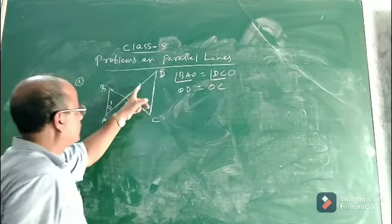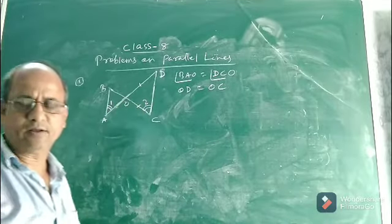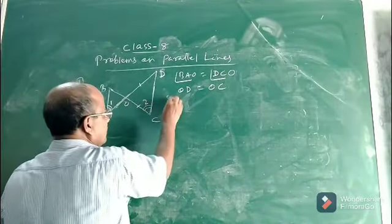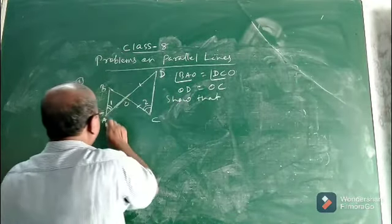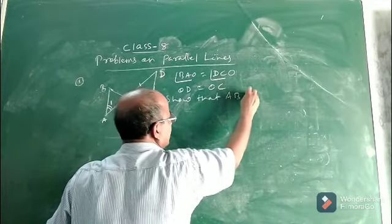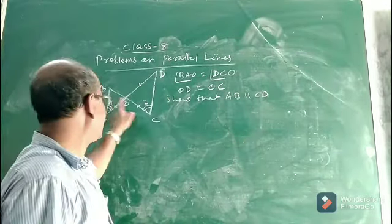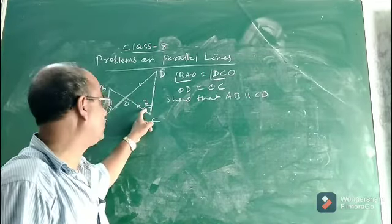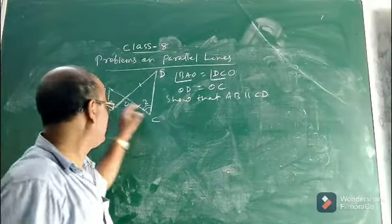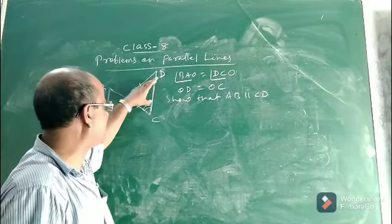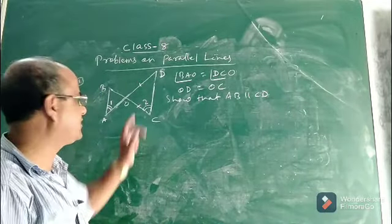So OD equal to OC and angle one equal to angle two — these are given. How will we prove that line segment AB and CD are parallel to each other? Let us see how to solve this particular question.